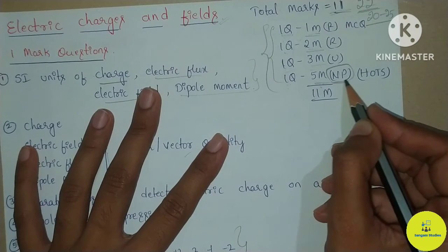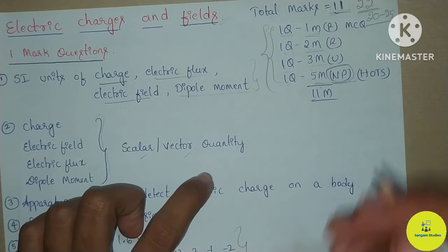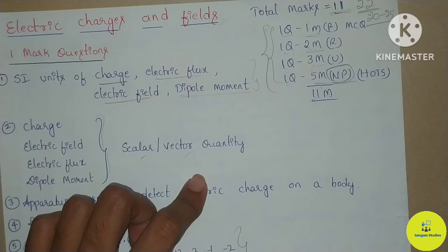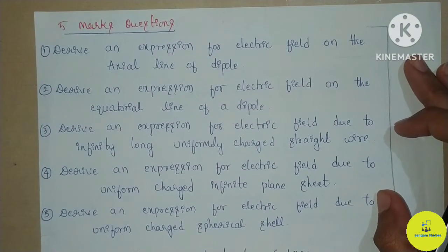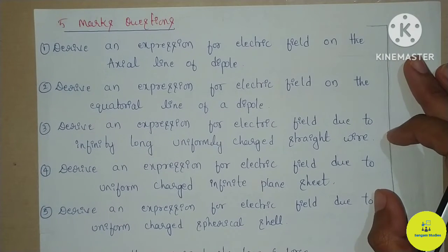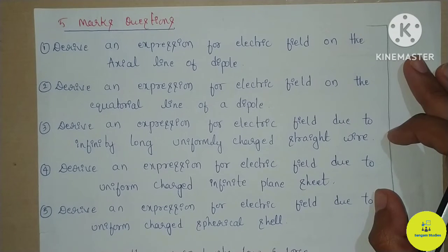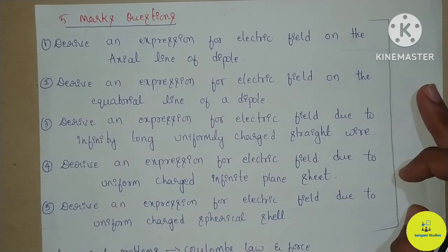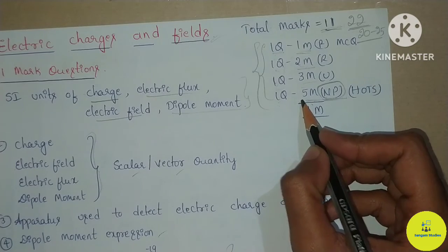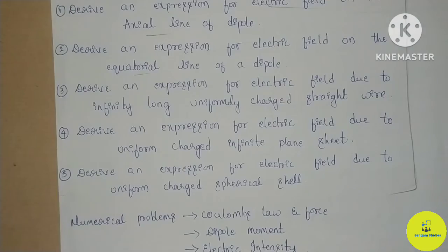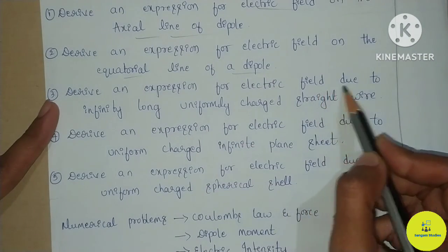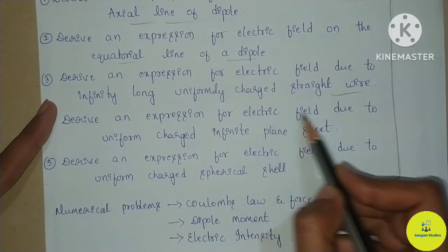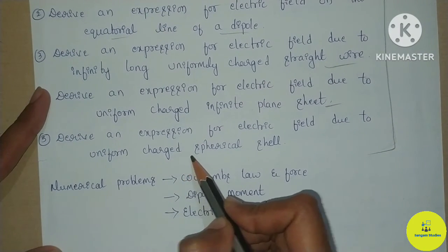For the five-mark questions, you can see the important derivations. These five-mark derivations appear every year and should not be skipped: electric field on the axial line of a dipole, electric field on the equatorial line of a dipole, electric field due to an infinitely long uniformly charged straight wire, electric field due to a uniformly charged infinite plane sheet, and electric field due to a uniformly charged spherical shell.